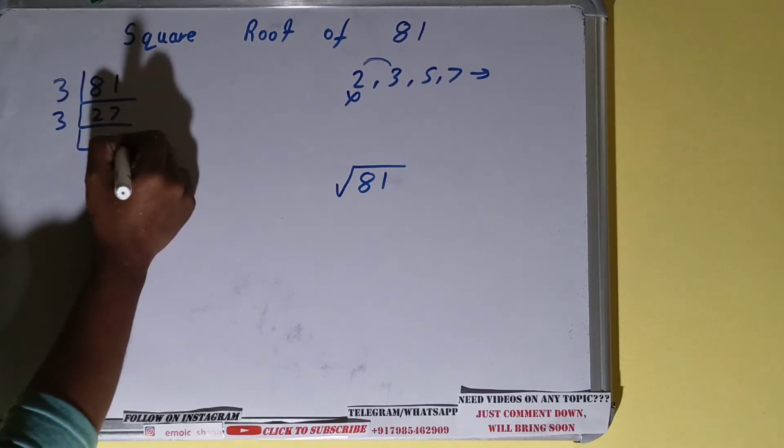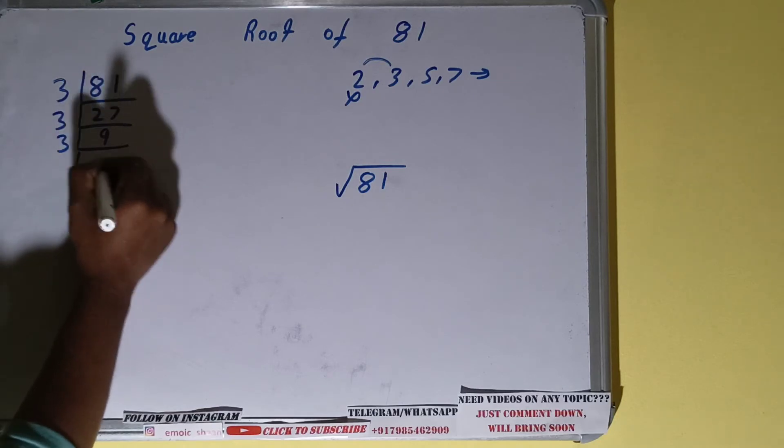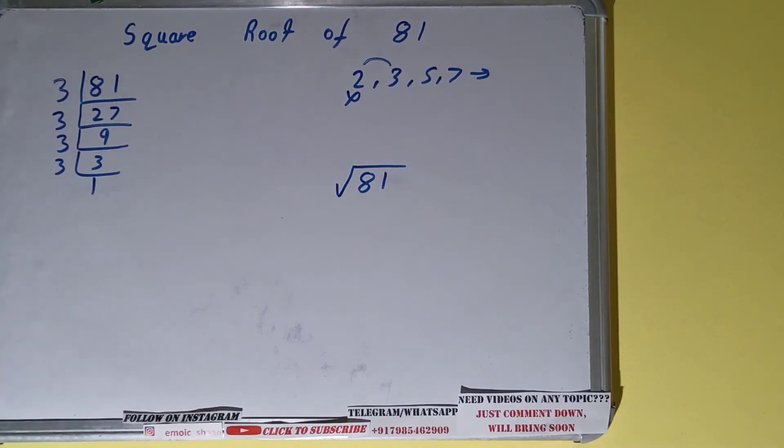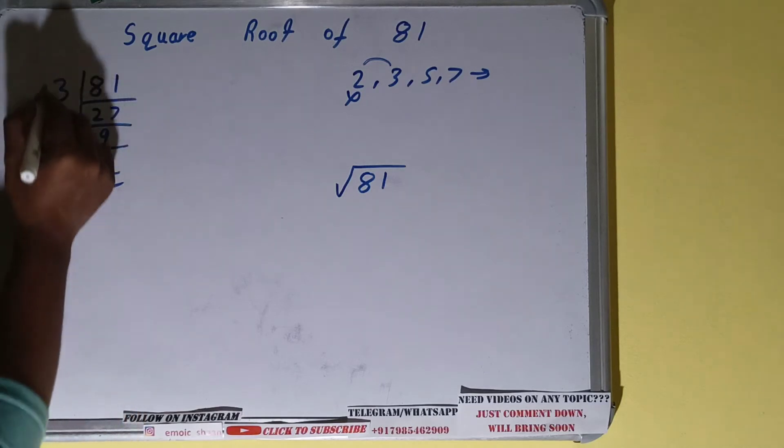27 is again divisible by three, we'll be left with nine. Nine is again divisible by three, we'll be left with three. Three is again divisible by three, and we'll be left with one. Once you get one, you need to stop, and whatever you have on the left hand side are the set of prime factors for the number.